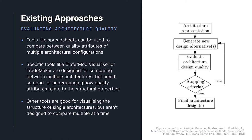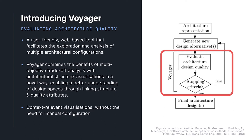Existing tools surveyed include Clafermoo Visualiser and Trade Maker. These tools are good for comparing amongst many architectural configurations as they include visualizations like 2D bubble plots and matrices representing the distribution of configurations in relation to their quality attributes. However, they don't include architectural structure information, making it difficult to understand how these attributes relate to the structure itself and to understand the structural trade-offs. Other tools are focused on architectural structure visualization and are effective for analyzing a single architecture at a time, but less so for comparing amongst multiple options simultaneously.